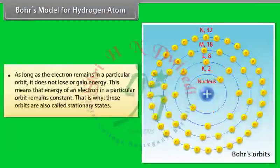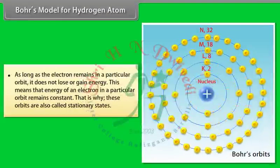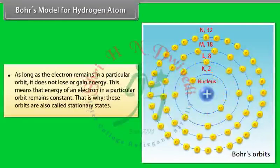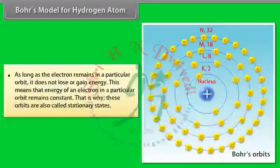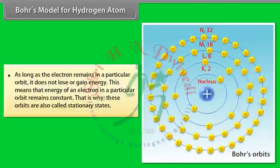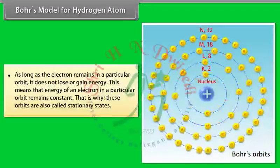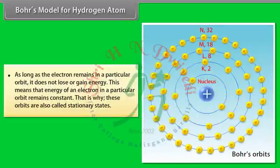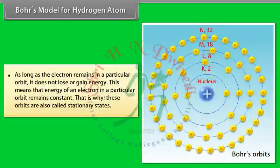As long as the electron remains in a particular orbit, it does not lose or gain energy. This means that the energy of an electron in a particular orbit remains constant. That is why these orbits are called stationary states.